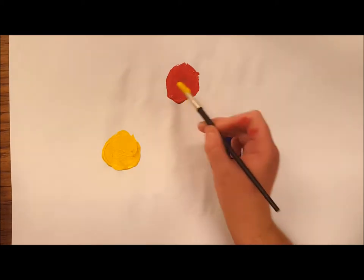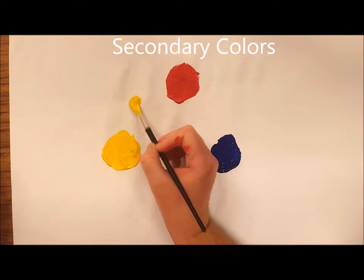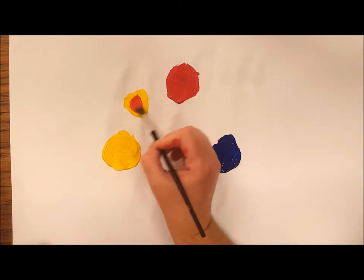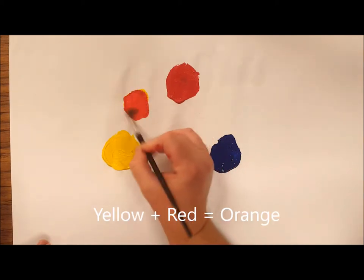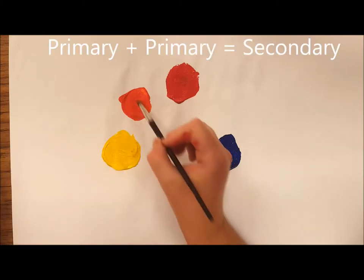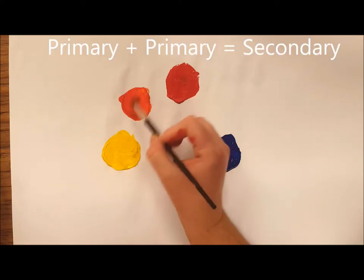The colors that are made by mixing two primary colors are called secondary colors. So I'm going to take some yellow, mix it with some red, and this makes orange. Orange is called a secondary color because it's made by mixing two primary colors.